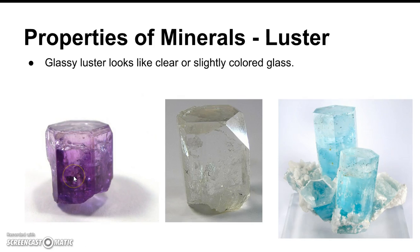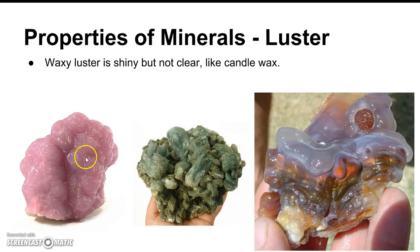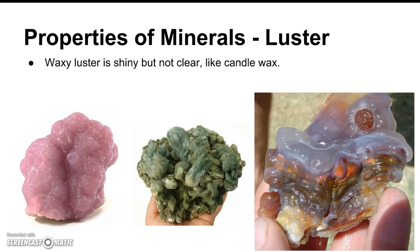Glassy luster looks like clear or slightly colored glass, like these examples here — that's number 14 on your video homework. Waxy luster is shiny but not clear, kind of like candle wax. These minerals are all waxy luster — they're kind of shiny, but you can't see through them. That's number 15 on your video homework.